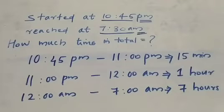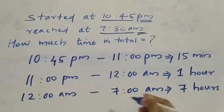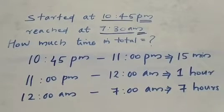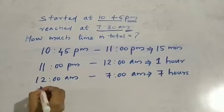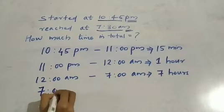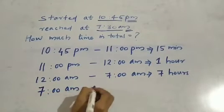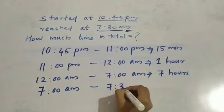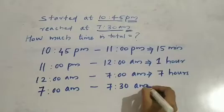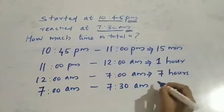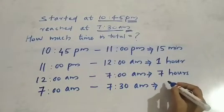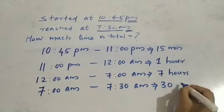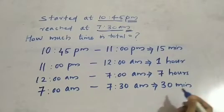12 to 1: 1 hour; 1 to 2: 2 hours; 2 to 3: 3 hours — like that, from 12 to 7, that is 7 hours they travelled. Now 7 AM to 7:30 AM — they ended at 7:30 AM — so that is 30 minutes only.